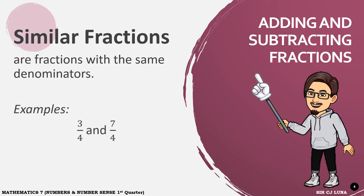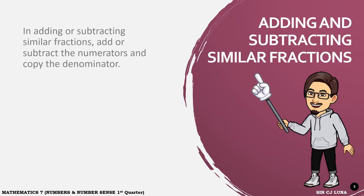Similar fractions are fractions with the same denominators. For example, we have 3 fourths and 7 fourths. They are similar because they have the same denominator which is 4. Another is 5 over 11 and negative 2 over 11. In adding or subtracting similar fractions,